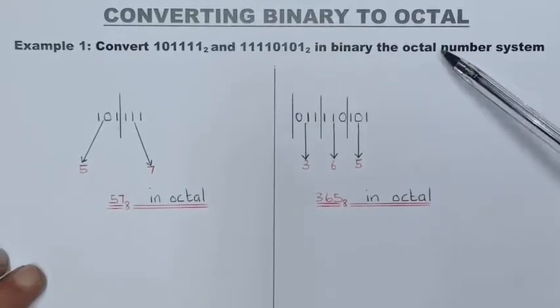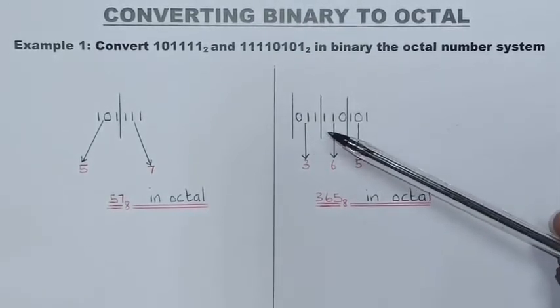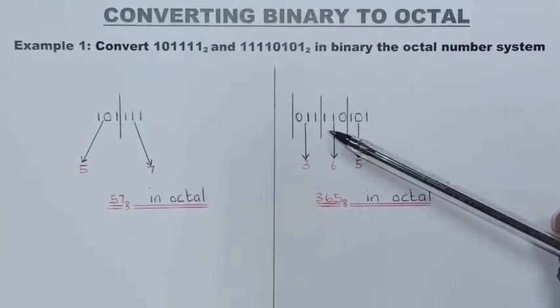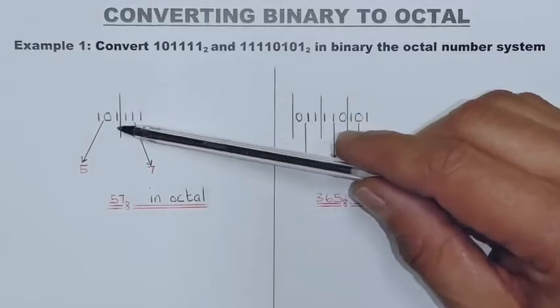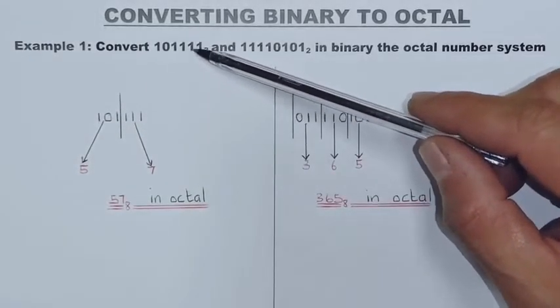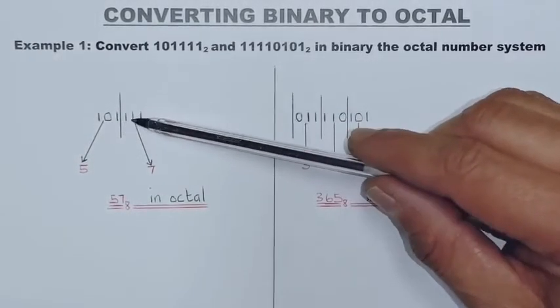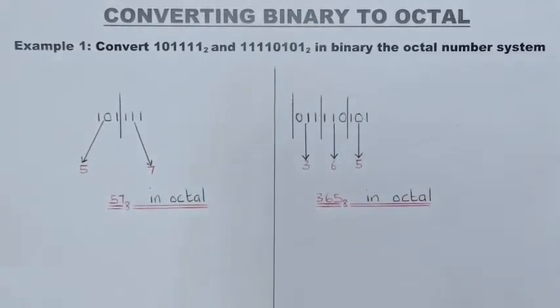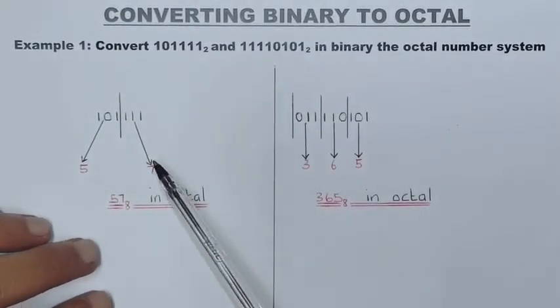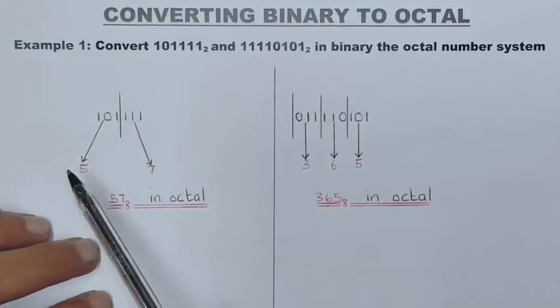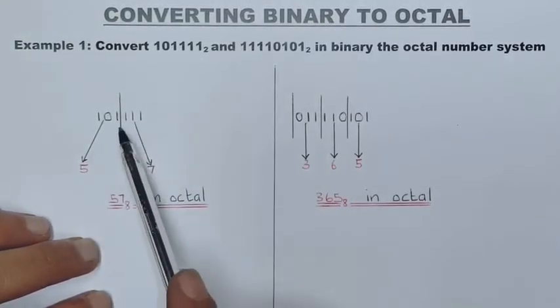All right, so this is very simple to do. As you can see here, what I've done is basically you write down the number that you have, the binary number, and then you will make groups of three digits in a group. There you can see what I've done.